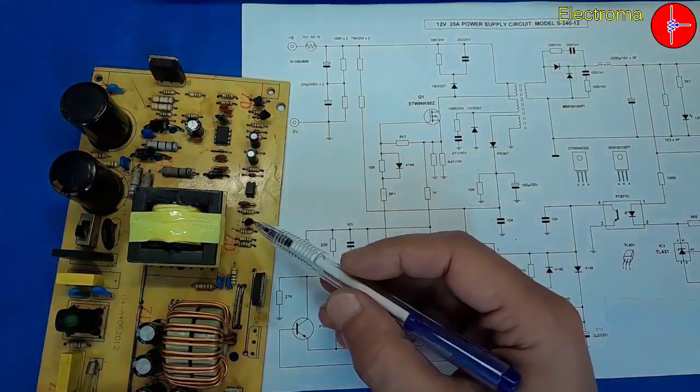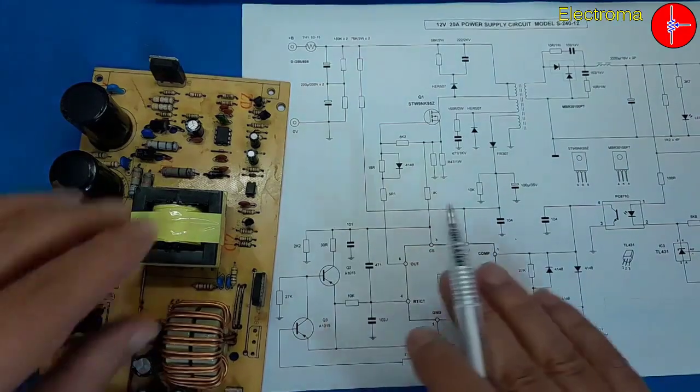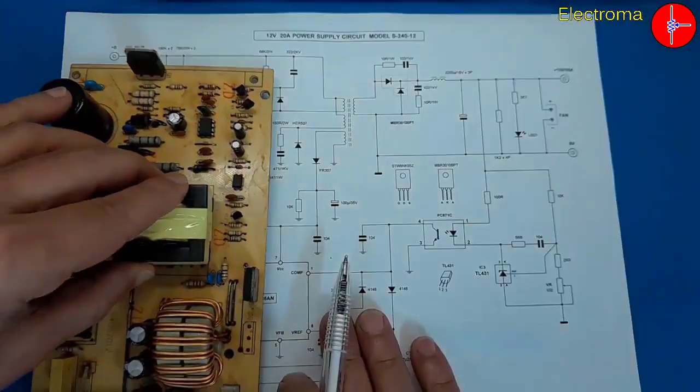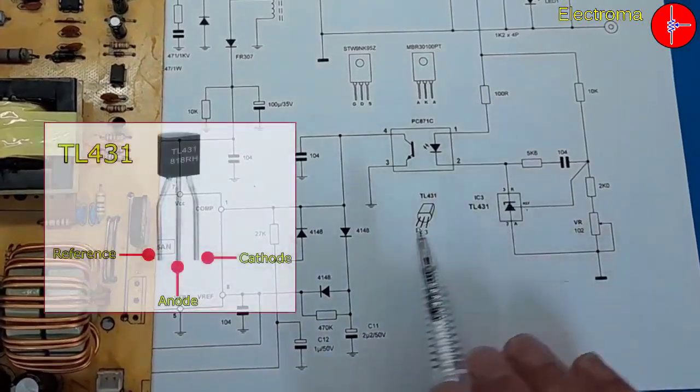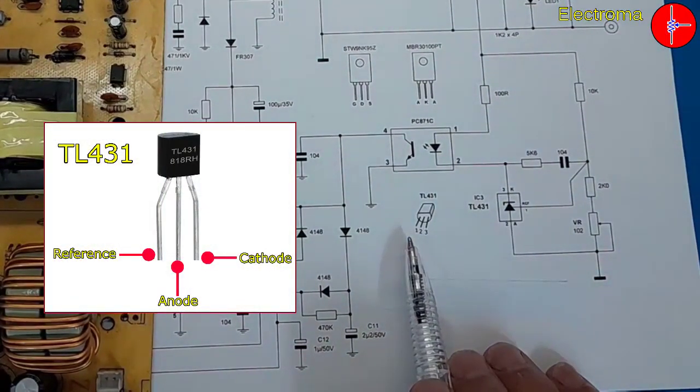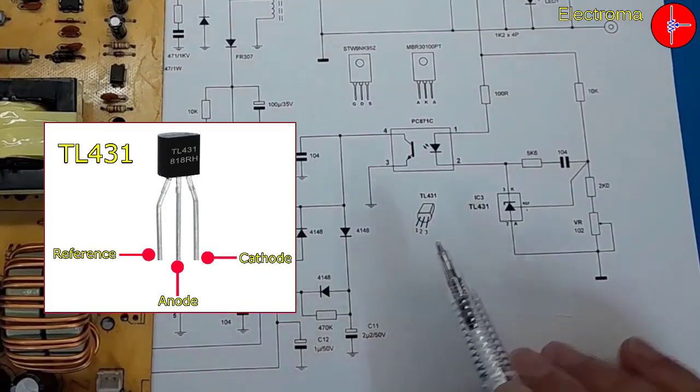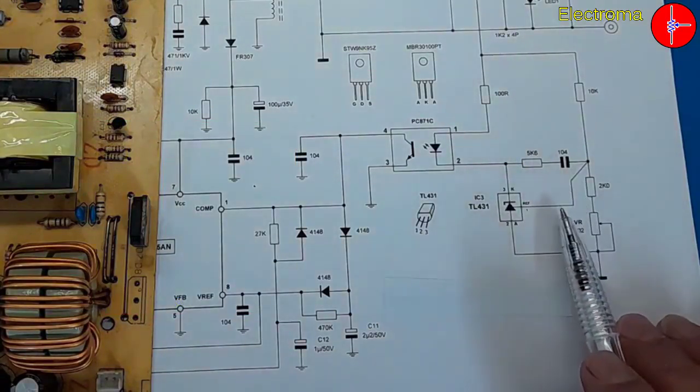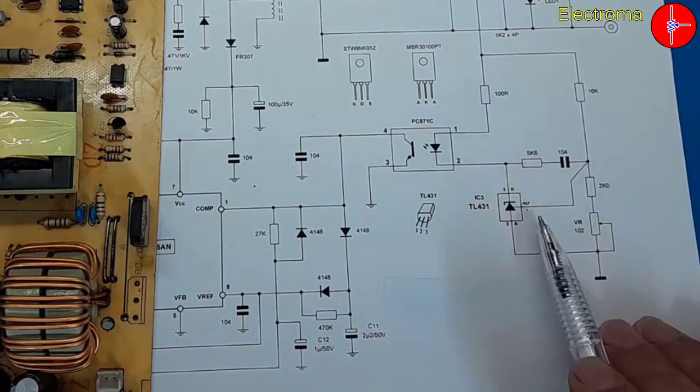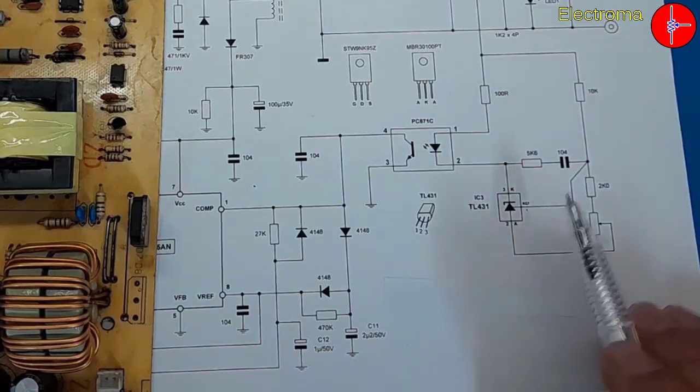The third point is related to the TL431 shunt regulator. The reference pin is on the left side, the middle pin is the anode, and the right pin is the cathode. This part is a shunt regulator which should have a voltage of about 2.5 volts on the reference pin.